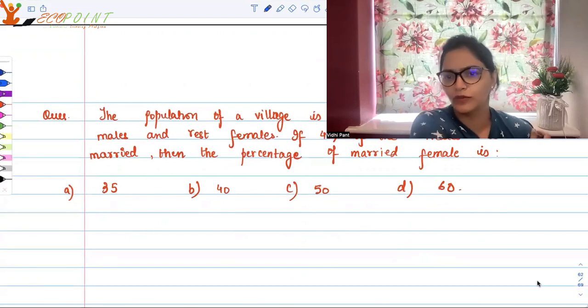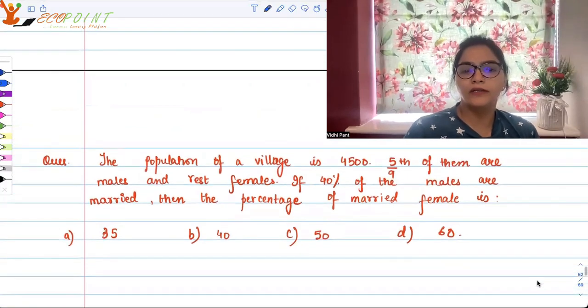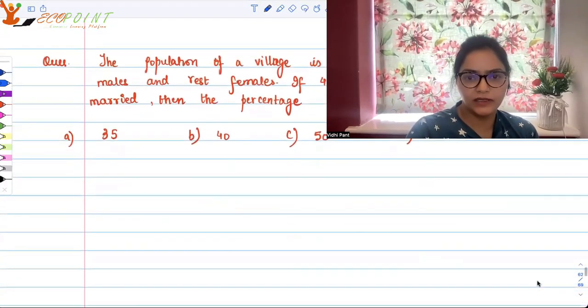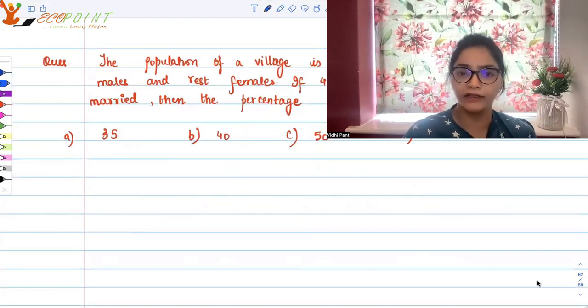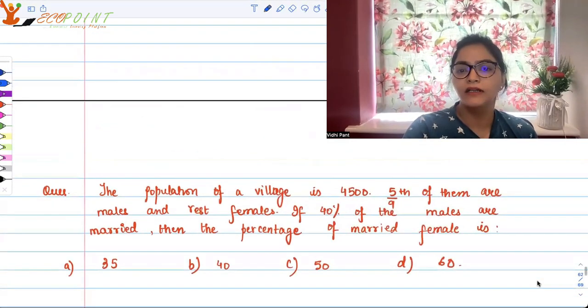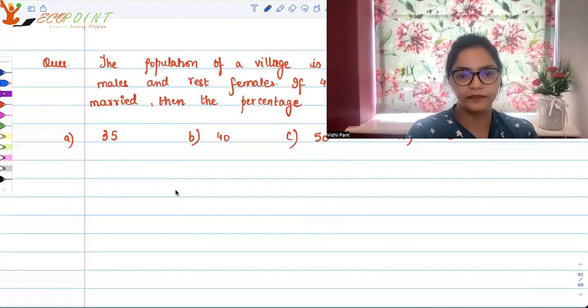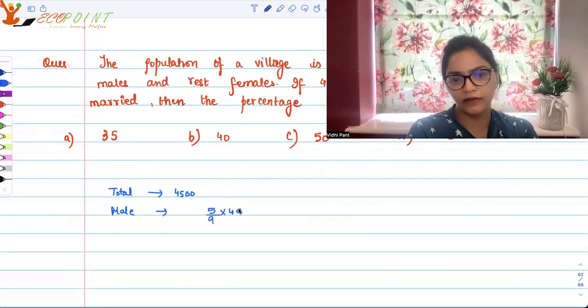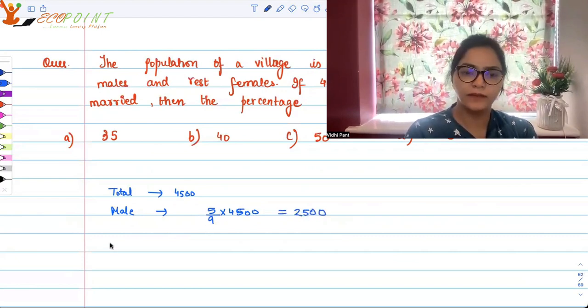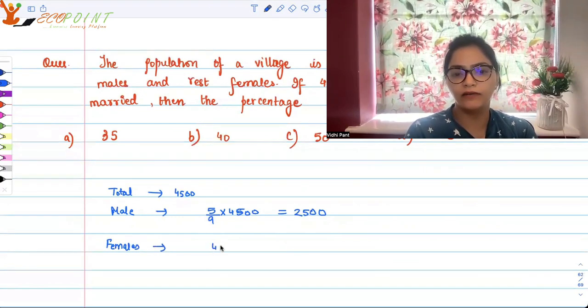The information is that five by nine of them are males. Total 4500. Males are 5/9 × 4500, which gives us 2500. That means females are 4500 minus 2500, which equals 2000 females.